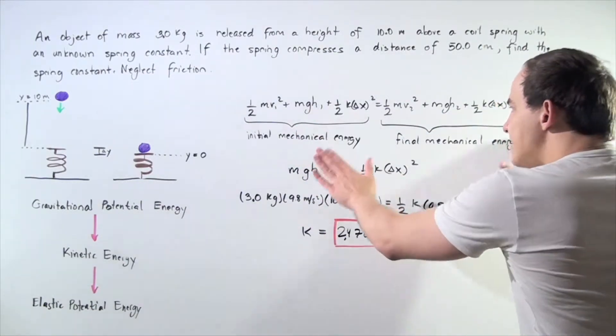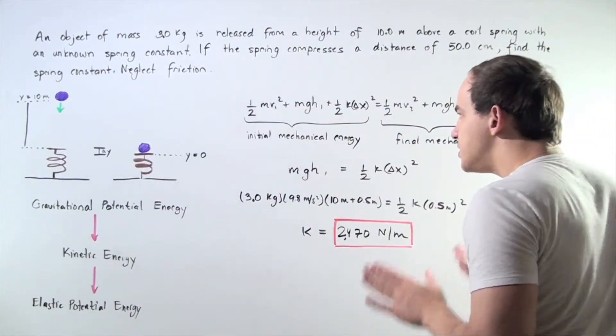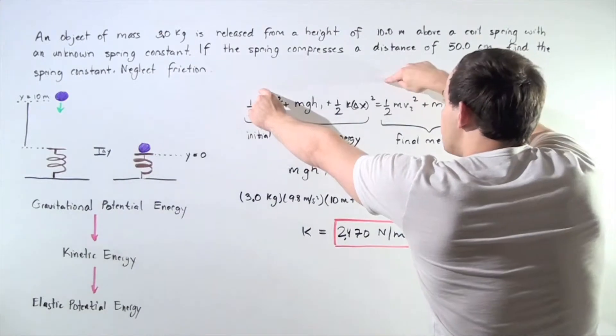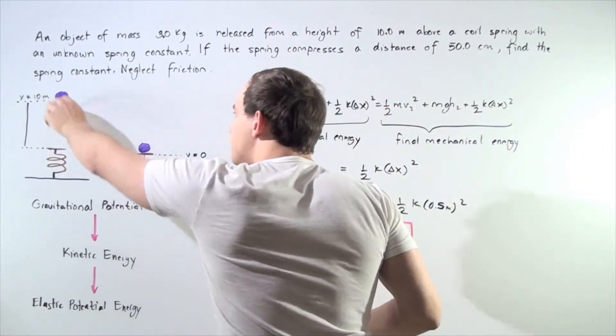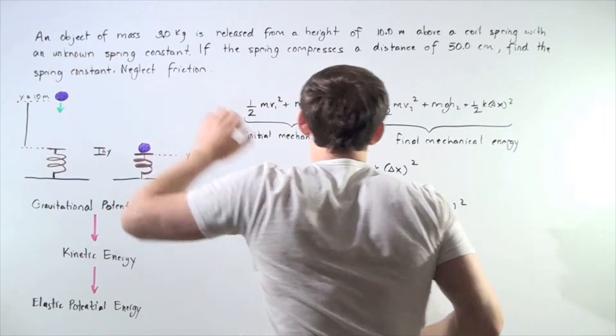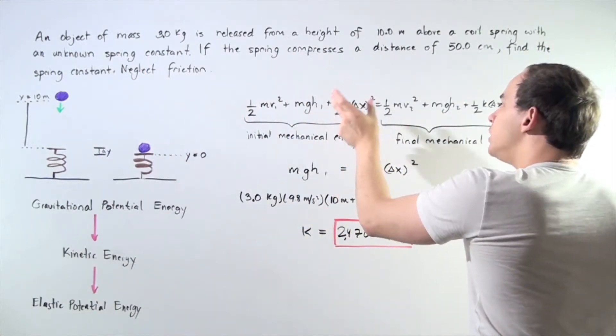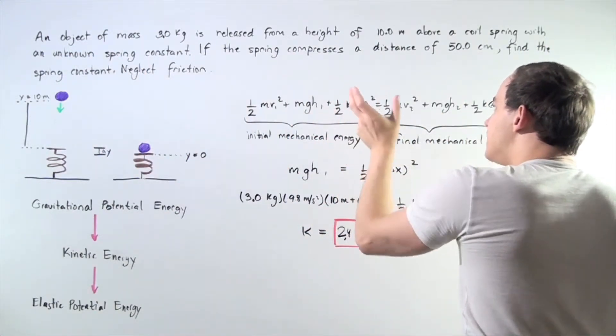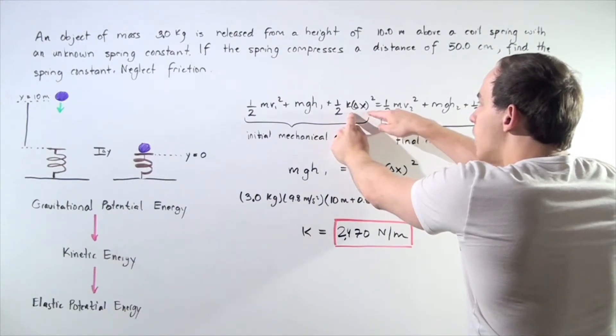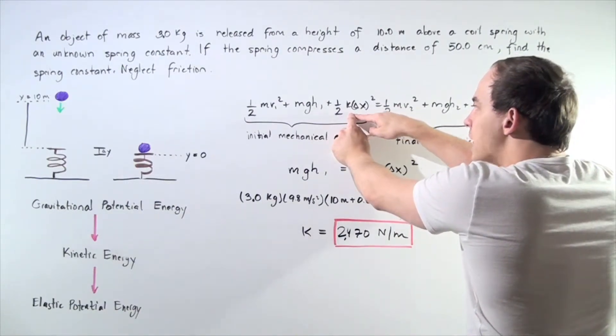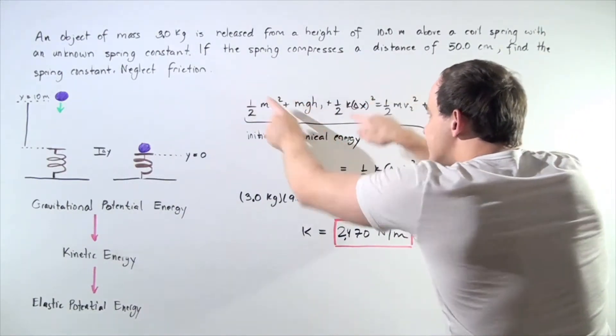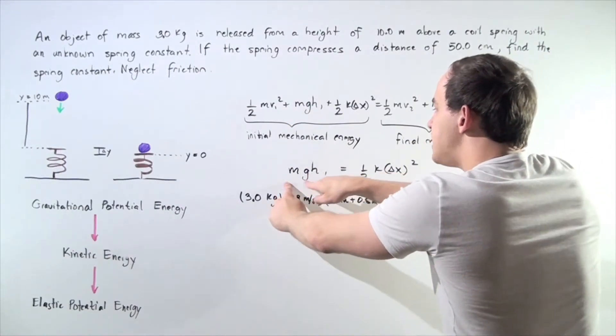In both cases, our velocities are zero, so these two terms cancel out. Before our object begins to travel, we have absolutely no elastic kinetic energy because our displacement of the spring is zero. So these two terms cancel out and we're left with mgh1 equals.